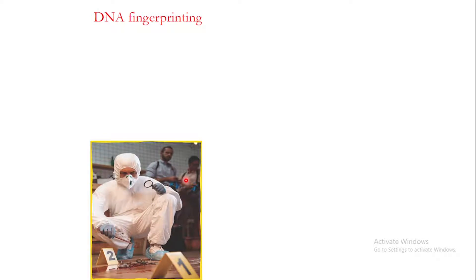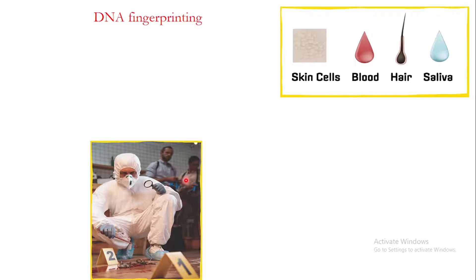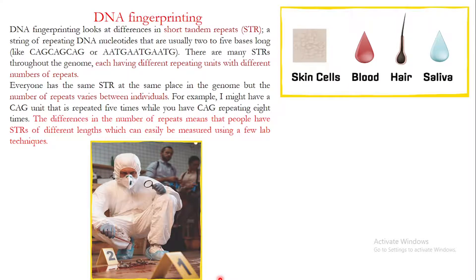Another important legal application of genetics is DNA fingerprinting. If there is a crime scene and you want to identify the criminal who committed a particular crime, you can collect samples — skin cells, blood, hair, or saliva — from the crime scene and extract DNA from those samples. You then use the technique of DNA fingerprinting to identify the criminal.